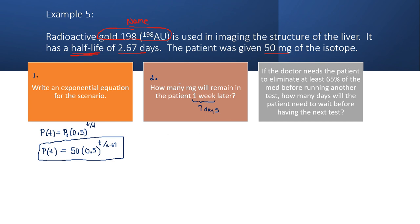And so it's asking me how many milligrams, so it's asking me to figure out the population in milligrams at another point in time. And so I will fill in P(t) equals 50 times 0.5, and my exponent is 7 over 2.67.